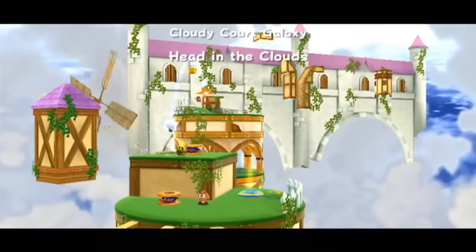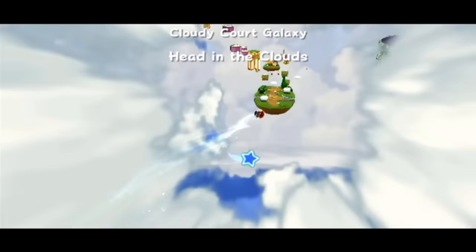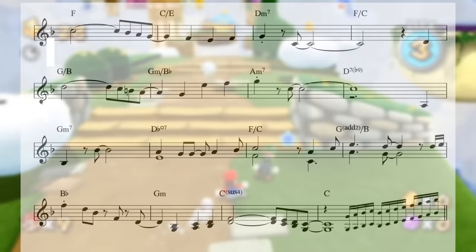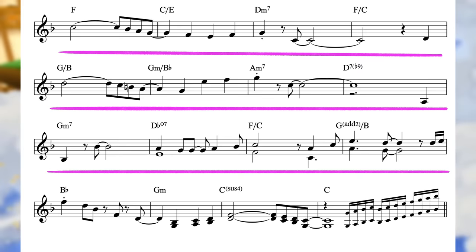Once again, I want to draw a comparison to another Mahito Yokota composition from Super Mario Galaxy 2, the theme from Cloudy Court Galaxy. This is kind of the sequel's version of the Gusty Garden Galaxy level, and the music draws obvious influence from the Gusty Garden theme. The structure is the same. A 4-bar melodic phrase sets up a question, then a following phrase answers it. Another 4-bar phrase increases the pace or intensity of the melody before resolving down to our tonic in the final 4-bar phrase.